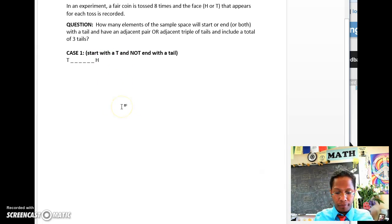We can imagine that we have a triple of T's, triple T's, and then the rest are H's, the other five. This can happen in one way.